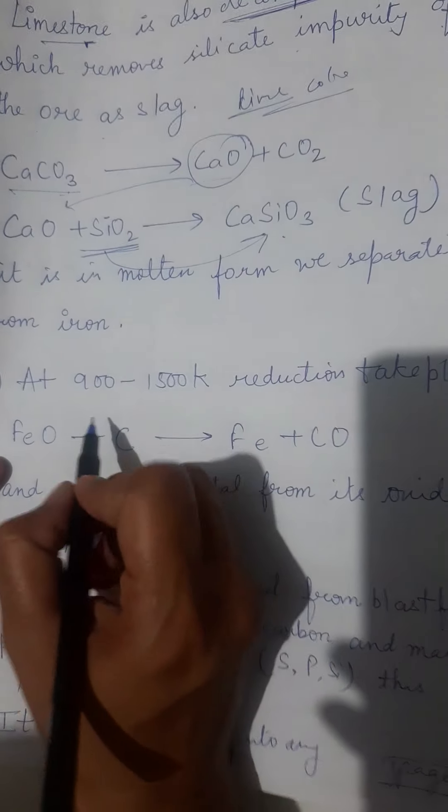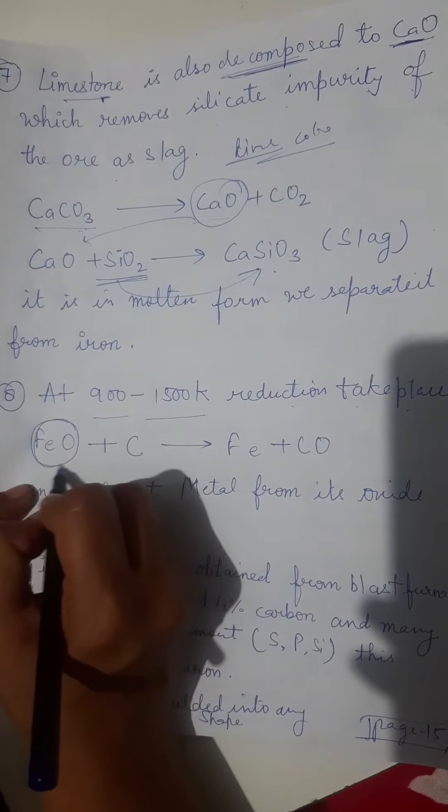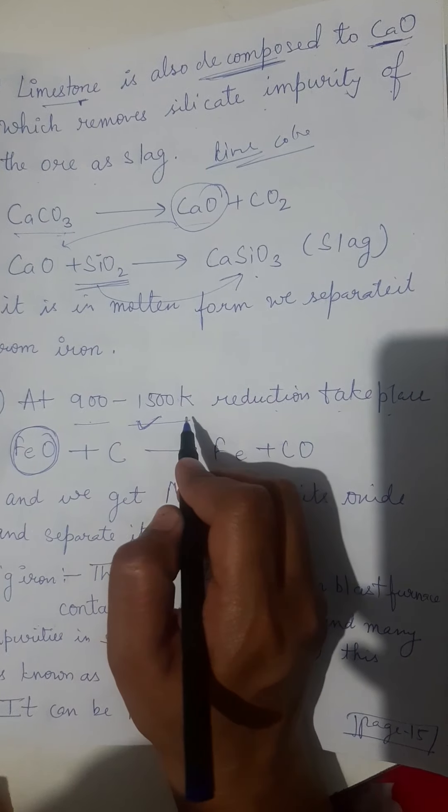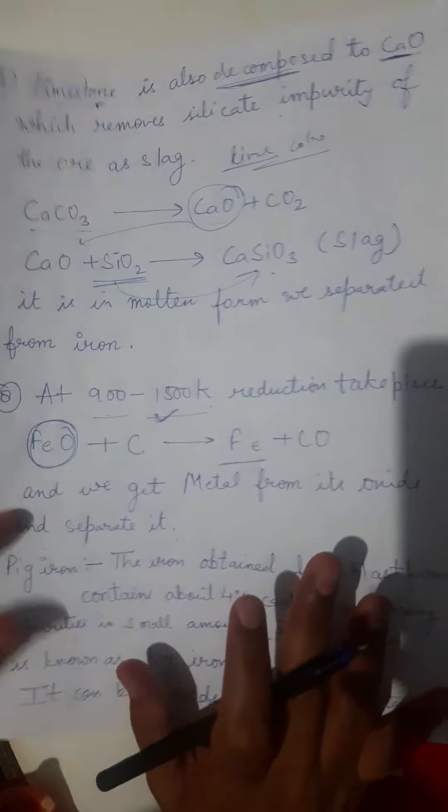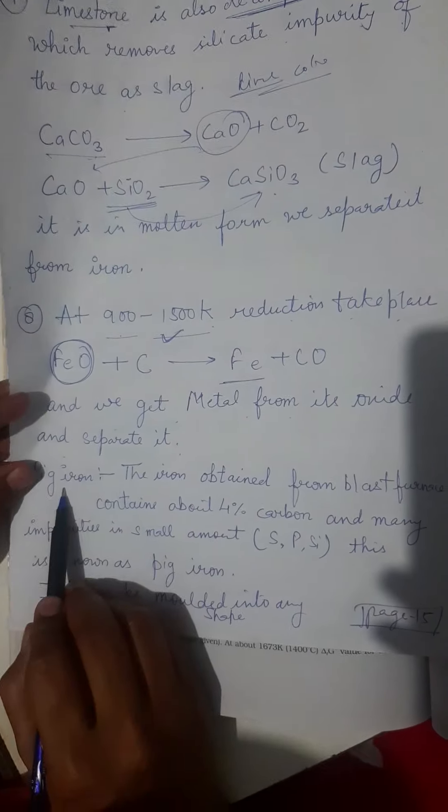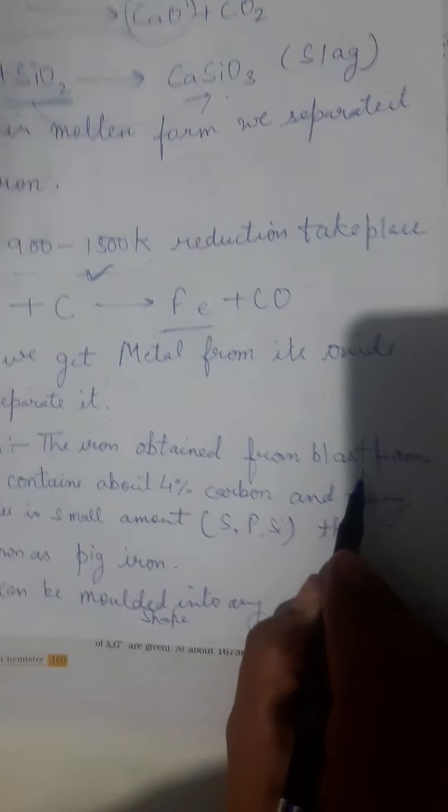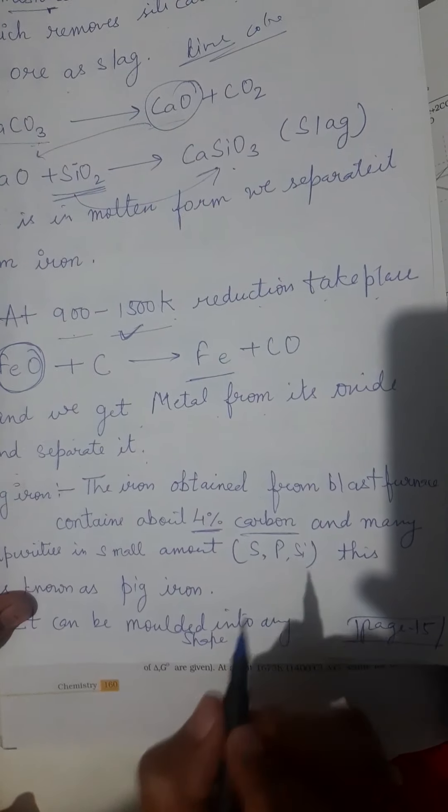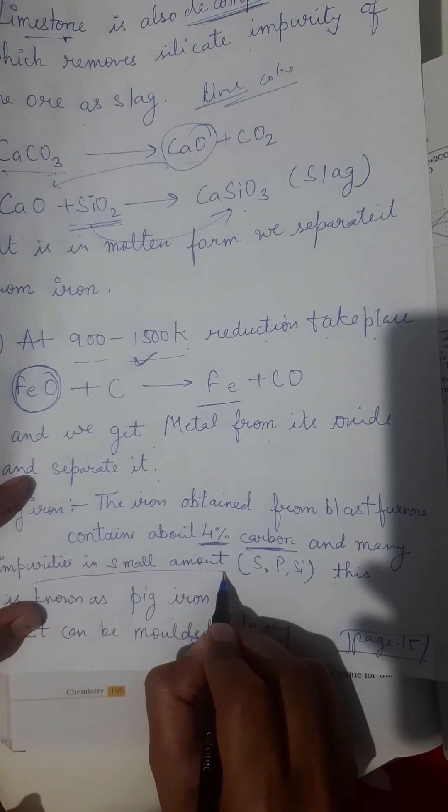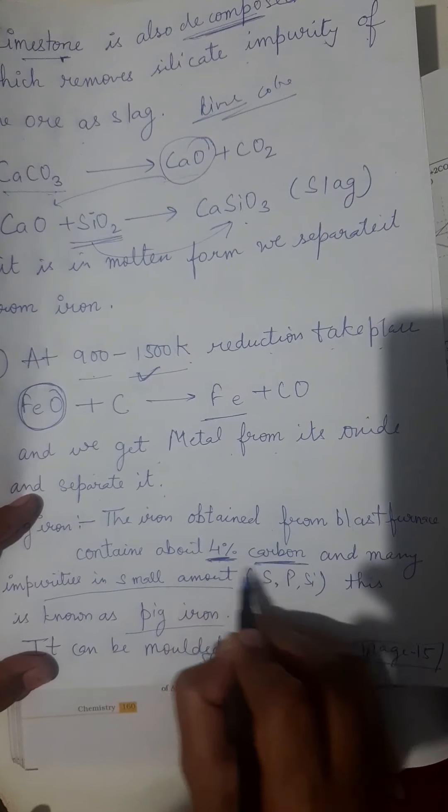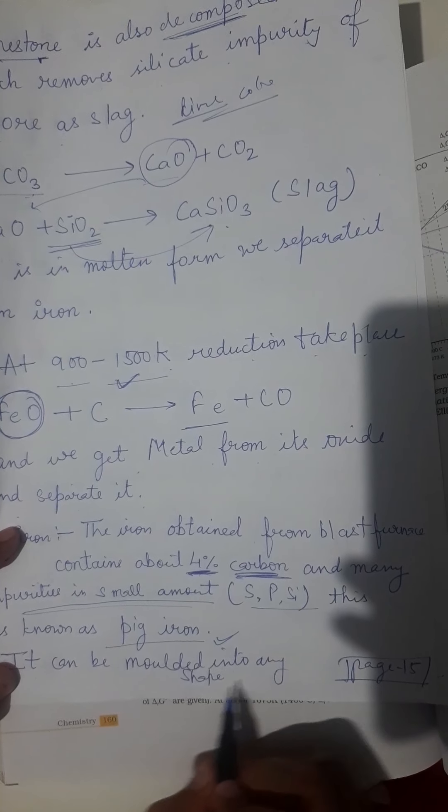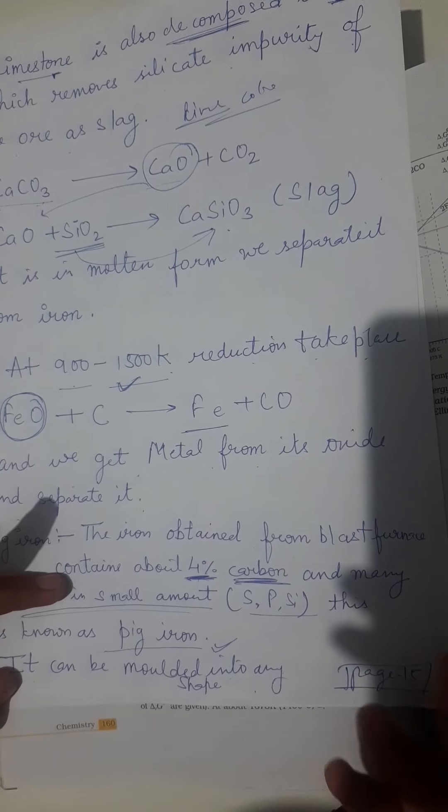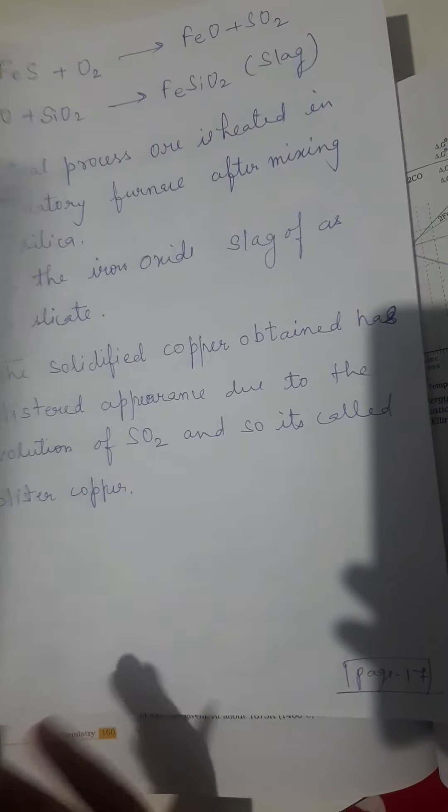Last point of this process: at 900 to 1500 Kelvin temperature, reduction takes place. The iron oxide is finally reduced at this temperature range and converted into metal. So we get metal from its oxide and separate it. Three types of terms we can use for iron: pig iron. The iron obtained from blast furnace contains about 4% of carbon. The iron which has 4% carbon and many impurities is called pig iron. This can be molded into any shape.